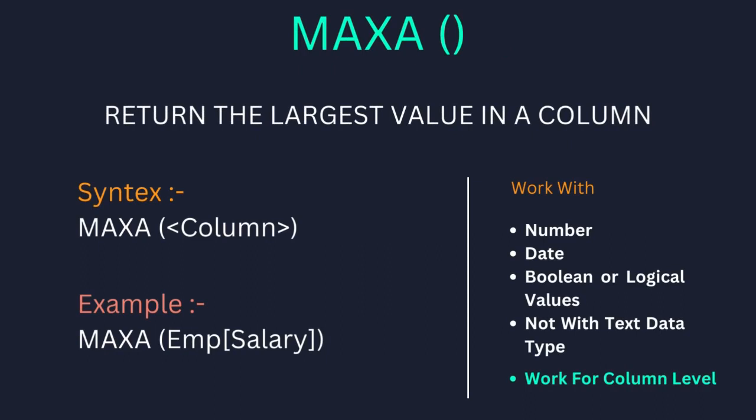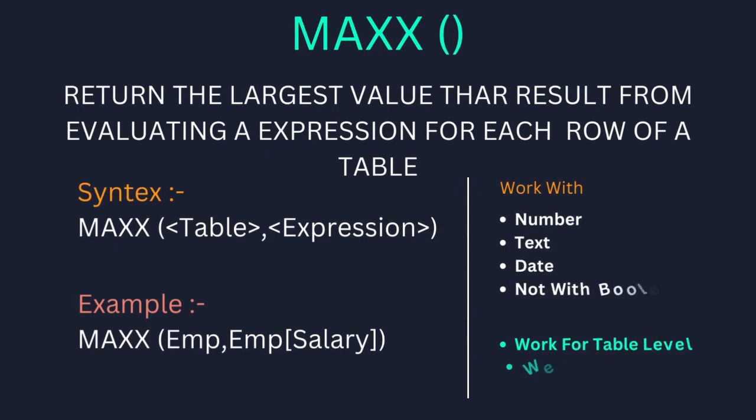MAXA also returns the largest value in a column, with syntax MAXA(column name). For example, MAXA(Employee[Salary]) gives the maximum salary. The difference is that MAXA works with number, date, and boolean data types, but it does not work with text data type. Like MAX, MAXA also operates at the column level.